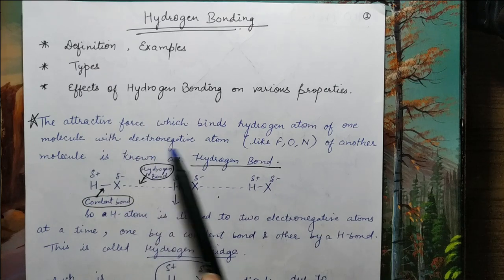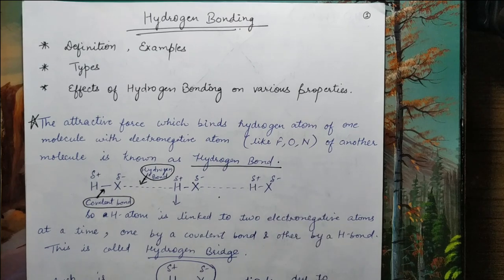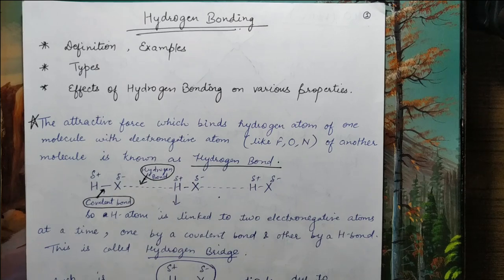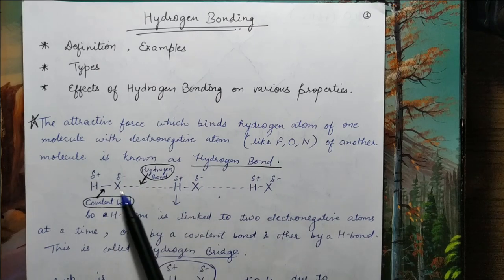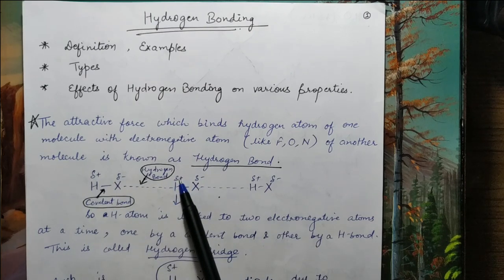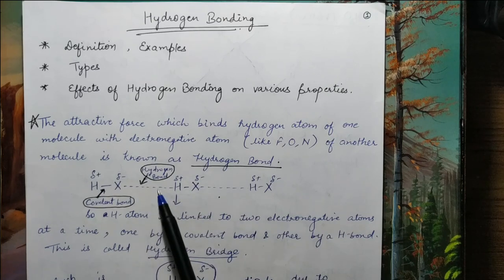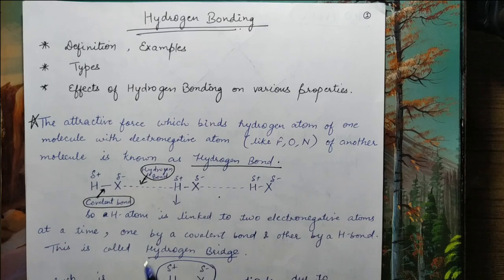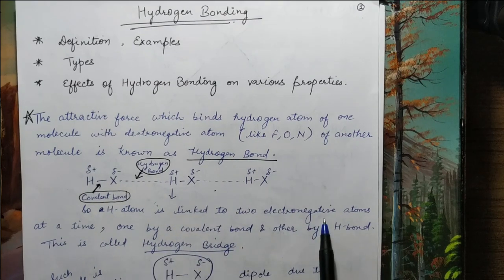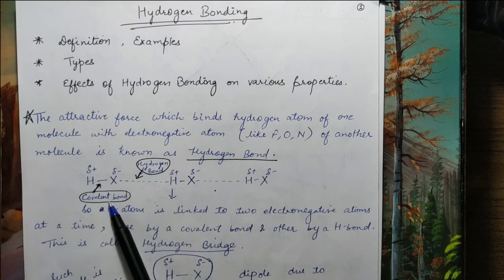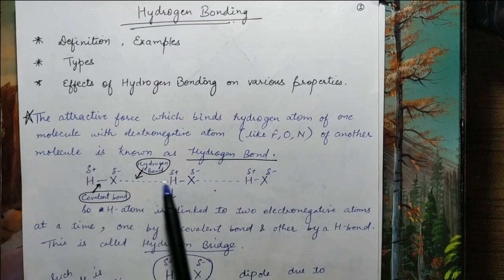That weak bond is called a Hydrogen Bond. The attractive force which binds the Hydrogen atom of one molecule with the electronegative atom of another molecule is known as a Hydrogen Bond. This means one hydrogen atom is linked to two atoms at a time — one by a covalent bond and the other by a hydrogen bond. So a hydrogen atom is linked to two atoms simultaneously: one by covalent bond and the other by hydrogen bond. This is called a Hydrogen Bridge, because a bridge is created between two molecules.